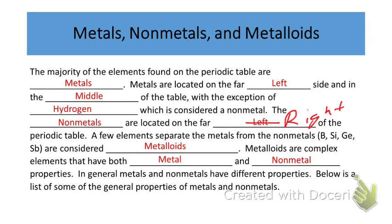A few of the elements are separated, again, from the metals and non-metals. That would be like boron, silicon, germanium, and antimony. And there are the metalloids. Metalloids are complex elements. They have both metal and non-metal properties. Okay. So just kind of know those basic ideas.